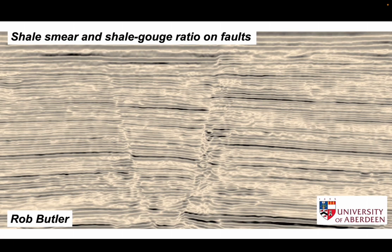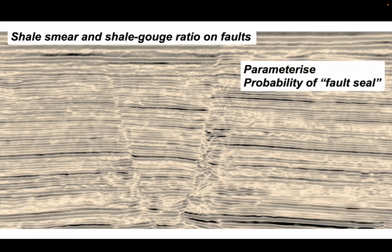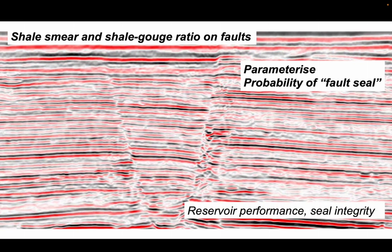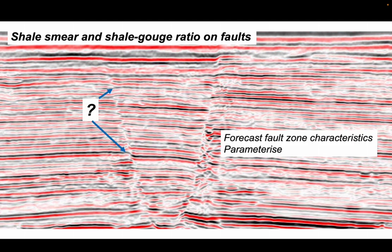Faults are important components in sedimentary basins. Can we parameterize how faults behave and assess the probability that these faults seal or transmit fluids? This is clearly important for assessing the performance of subsurface reservoirs for hydrocarbons and the integrity of seals, but they're also important for assessing the integrity of subsurface geostorage sites for CO2 or even nuclear waste. So can we forecast the characteristics of fault zones in the subsurface? How can we parameterize their characteristics?